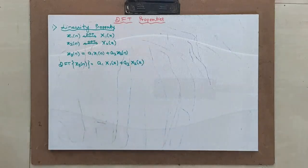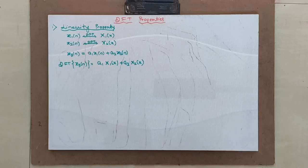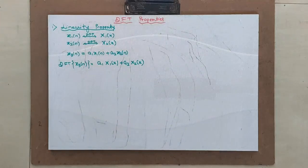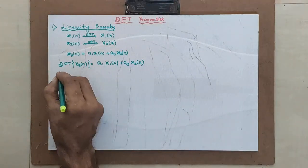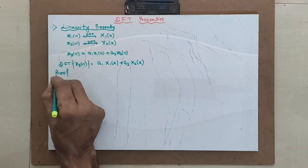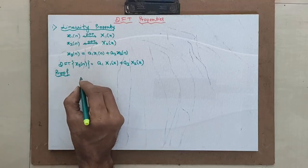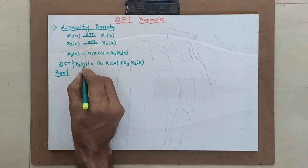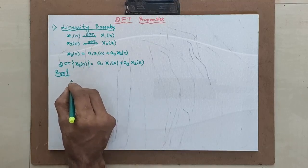If it follows this property, then the sequence is called linear — that is the linearity property. It is very easy to prove. Let us consider the proof for this.